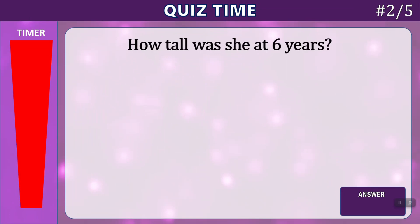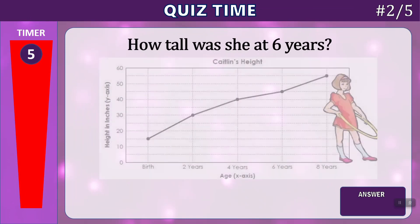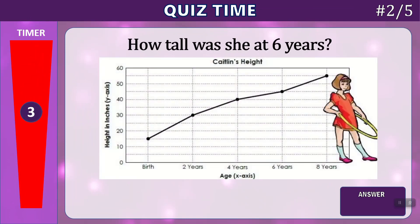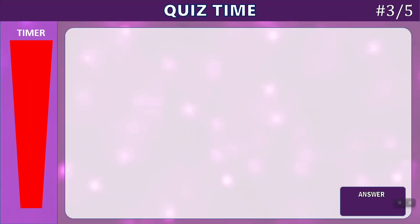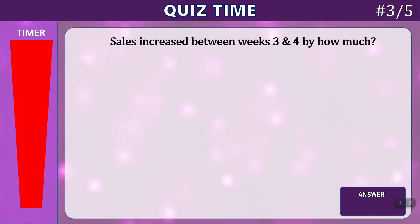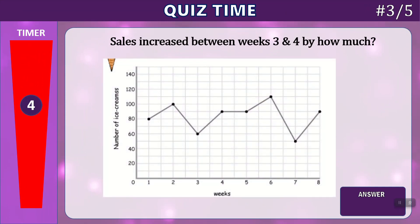Question number two: How tall was she at six years old? Time's up. If you find on the graph at the bottom six years old, go up to the graph, and across to the left, you can see between 40 and 50 — it's 55 inches. Question three: Sales increase between weeks three and four by how much? You have five seconds.